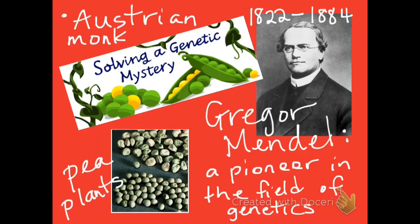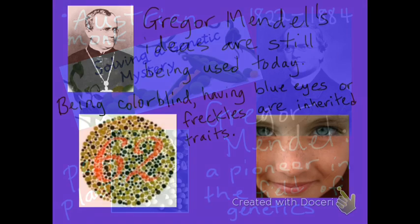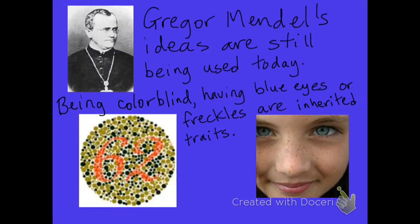Gregor Mendel was an Austrian monk who lived from 1822 to 1884. He studied pea plants and was considered to be the pioneer in the field of genetics. Gregor Mendel's ideas are still being used today. Being colorblind, having blue eyes, or freckles are inherited traits.